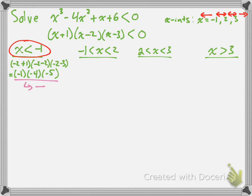Next, for the interval -1 < x < 2, let's try x = 0. Substituting: (0 + 1)(0 - 2)(0 - 3) = (1)(-2)(-3). We have a positive times a negative times a negative, which gives a positive number. Since we're looking for negative values — where the function is less than zero — this interval is not a solution to our inequality.